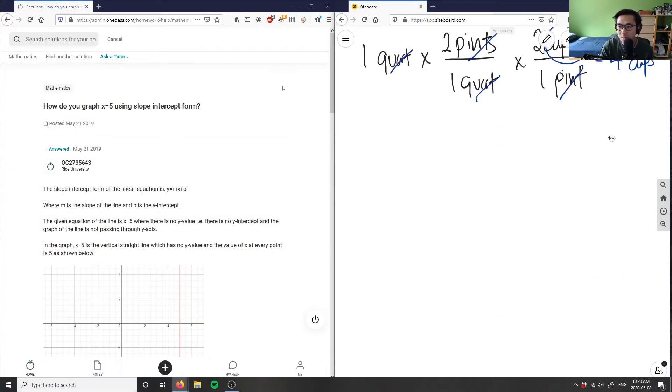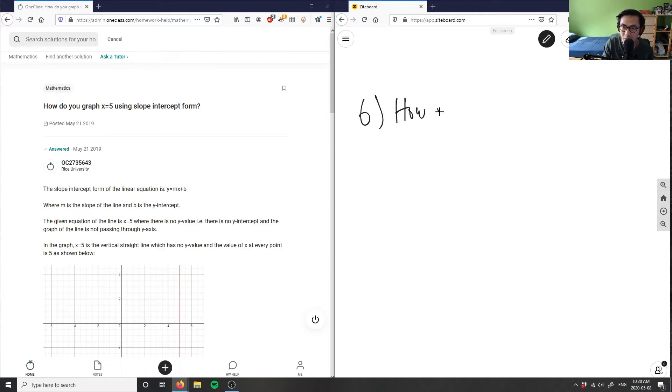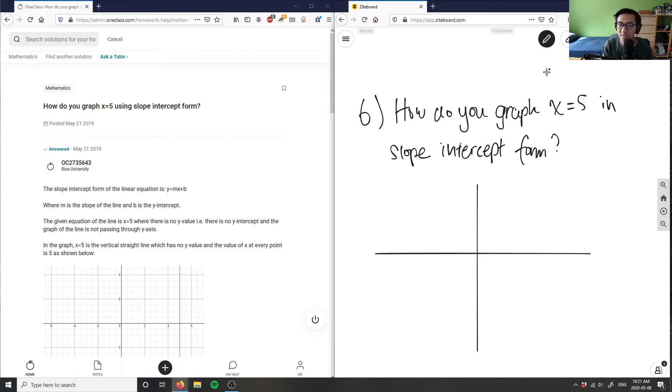Okay, number six. How do you graph x equals five in slope-intercept form? So I'm going to draw, I'm going to sketch this graph for you here. And what we have here is we have x equals five, right?